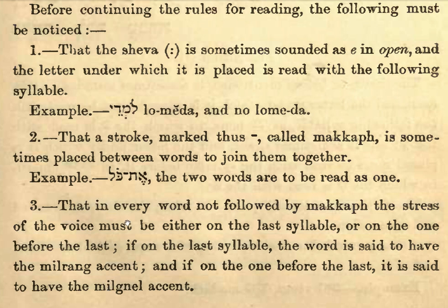This is revision — it's been in the previous lesson and I'm going to go over it again. If you feel you know it, just skip this section of the recording. Before continuing, the rules for reading: the following must be noticed — that the schwa is sometimes sounded as E in an open syllable, and the letter under which it's placed goes with the following syllable. So: lo-me-de, and not lo-me-de. Not lo-me-de but lo-me-de.